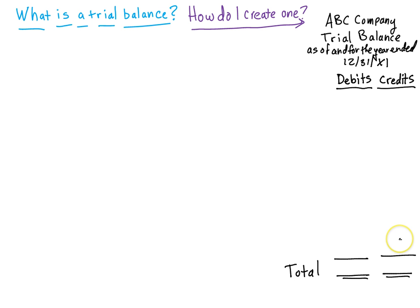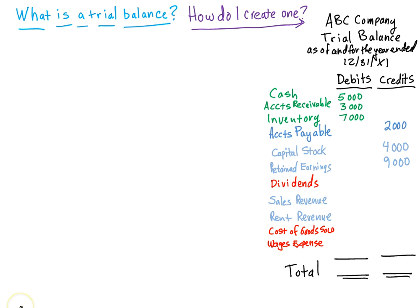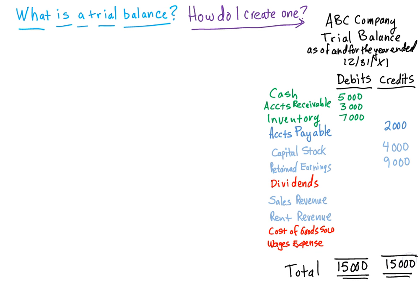I'm going to list all the accounts and give you a beginning trial balance so you know what one looks like. For this example, I made up some numbers for our debit and credit balances — how much cash, receivables, and inventory we had to start the period, how much we owed to our suppliers, how much our investors contributed, and how much earnings they retained in the business. This trial balance at the beginning of the 1231X1 period balances: debits and credits both add up to $15,000.